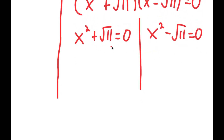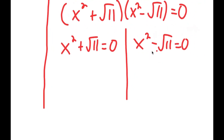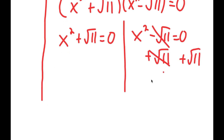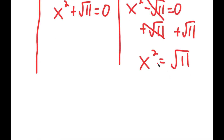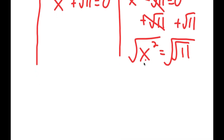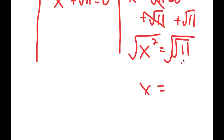For x squared minus the square root of 11 equals 0, I add the square root of 11 on both sides to get x squared equals the square root of 11. Taking the square root of both sides, the square root of x squared is x, and the square root of the square root of 11 is the fourth root of 11. This gives x equals positive or negative the fourth root of 11.